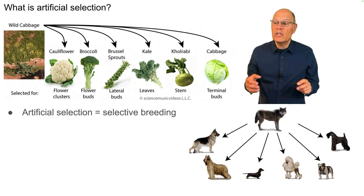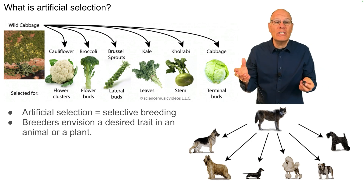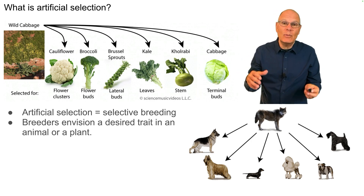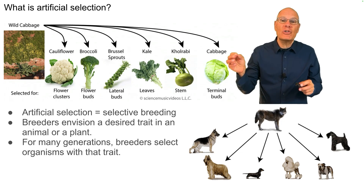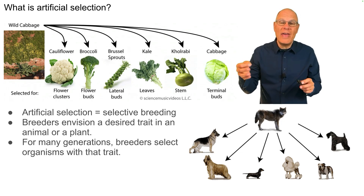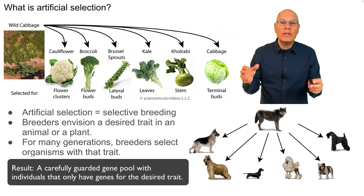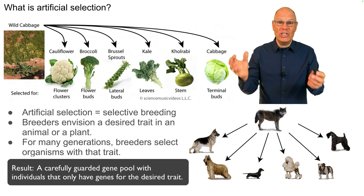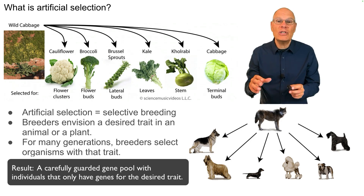Artificial selection is also known as selective breeding. In this process, breeders envision a desired trait in an animal or a plant. For many generations, the breeders select organisms with that trait, and over time, this creates a carefully guarded gene pool with individuals that only have genes for the desired trait.